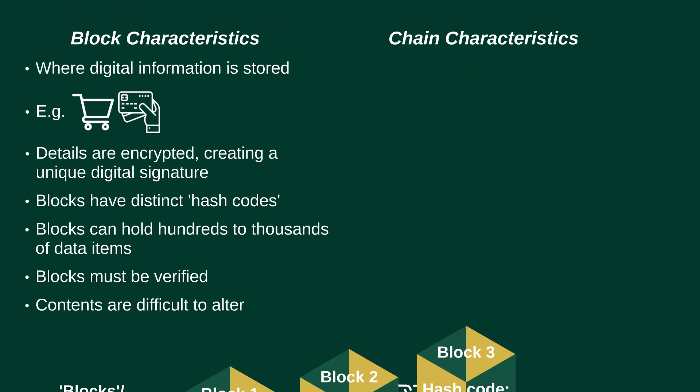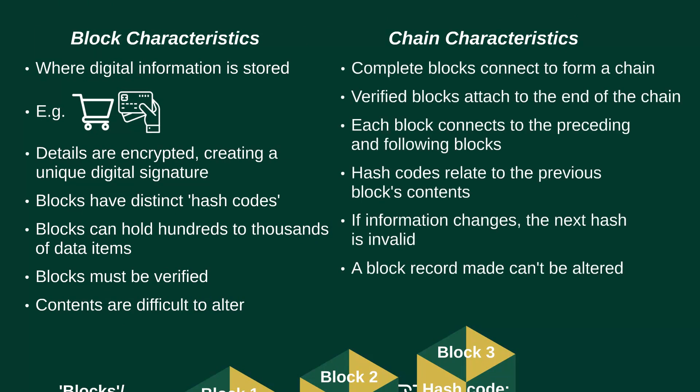Now let's talk about the chain characteristics. The blocks are connected to each other by a chain, and that happens once the block is complete. Multiple connected blocks form a chain — that's how we get the name blockchain. It's the chain that makes the information stored in the blocks secure. As soon as a block is verified, it attaches itself to the block at the end of the chain.